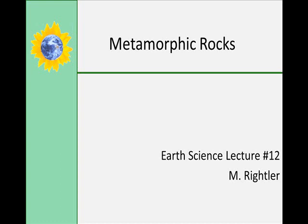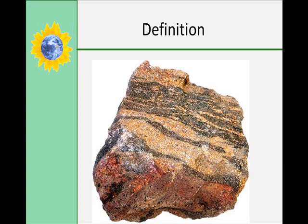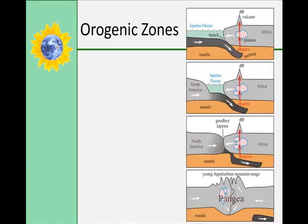A metamorphic rock is one whose original form has been changed by heat, pressure, or chemically active fluids. This alteration is called recrystallization, and these changes are not caused by melting. If it was melted and cooled, it would be an igneous rock instead of a metamorphic.